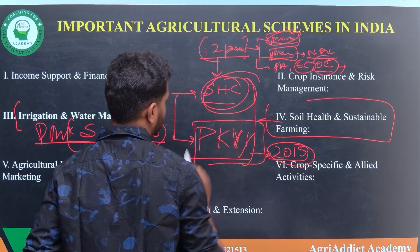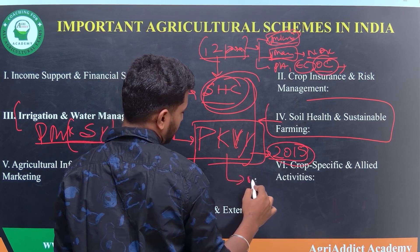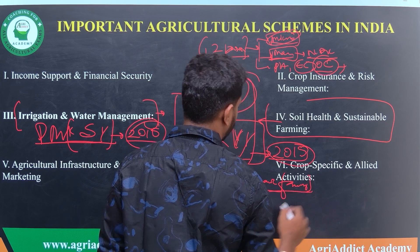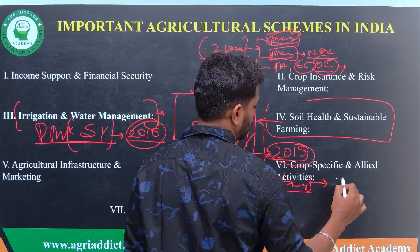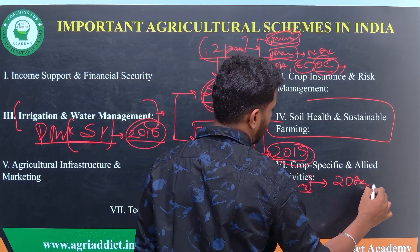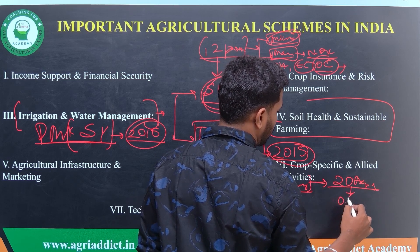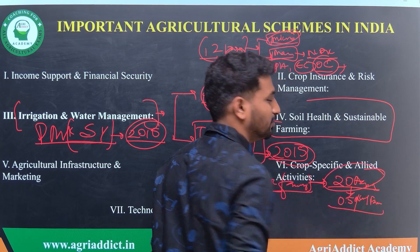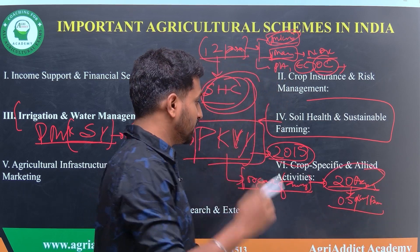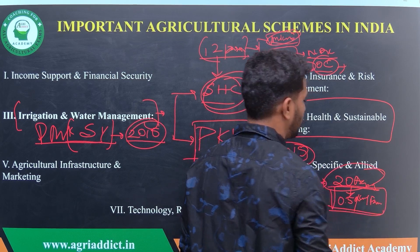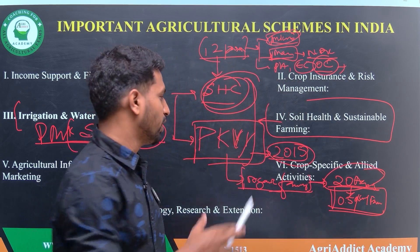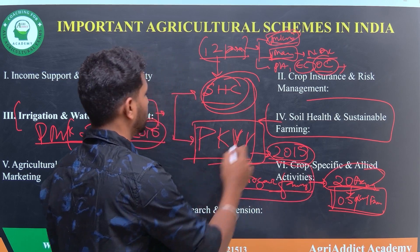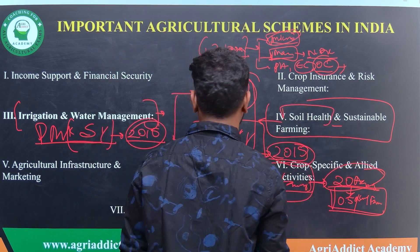The second scheme in this category is Paramparagat Krishi Vikas Yojana, which is organic farming encouragement from the Government of India. It is provided for a group of farmers having a minimum of 20 acres of land, with each farmer holding minimum 0.5 acres. The government provides guidance to carry out organic farming practices.